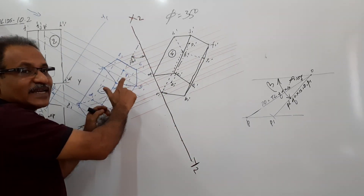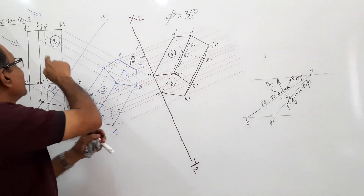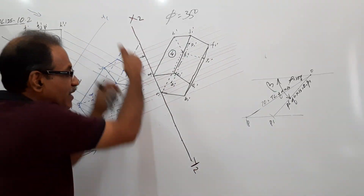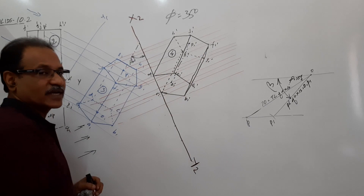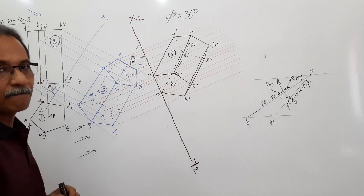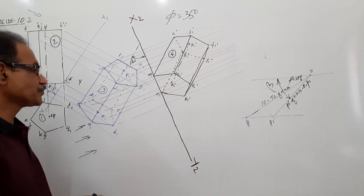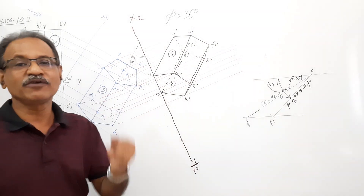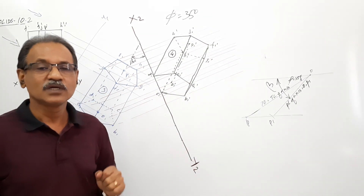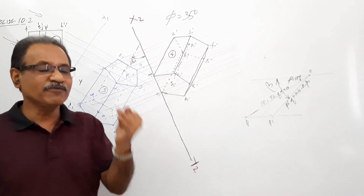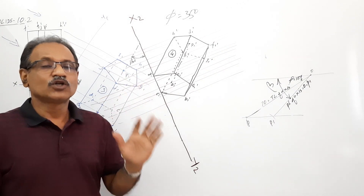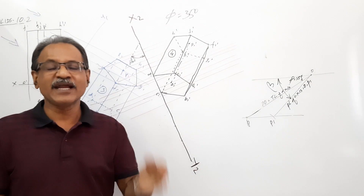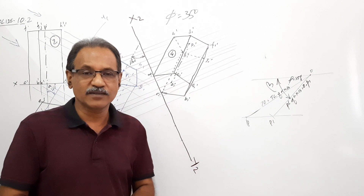Beta is 55 degrees. In 10.1 and 10.2, beta is the phi value and that beta is the X2Y2 value. Comparing 10.1 and 10.2: 10.1 and 10.2 are drawn using the auxiliary method, while 9, 9.1, and 9.2 are drawn using the redrawing method.